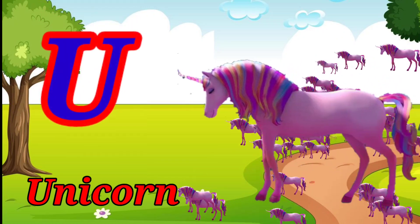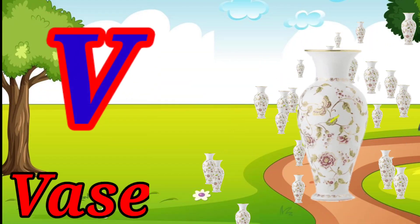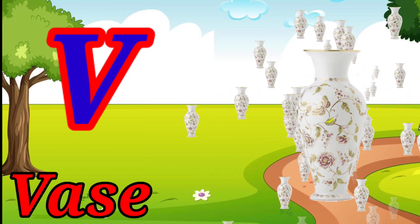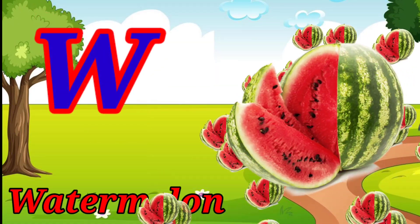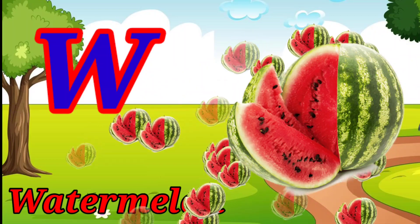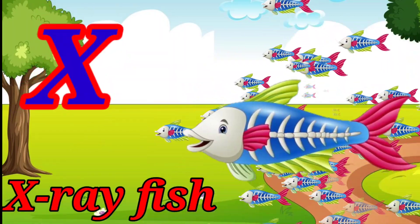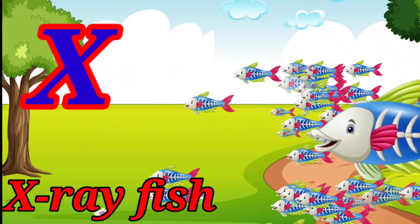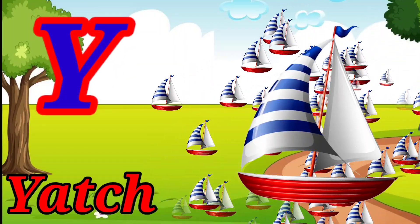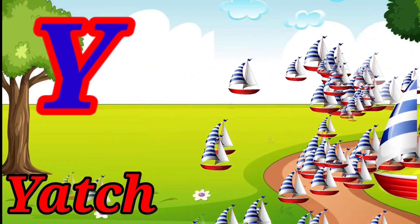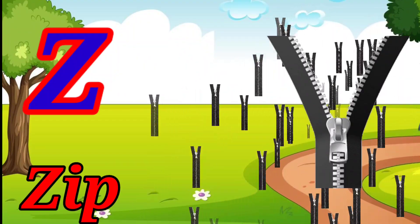U for unicorn, V for vase, W for watermelon, X for x-ray, Y for yacht, Z for zip.